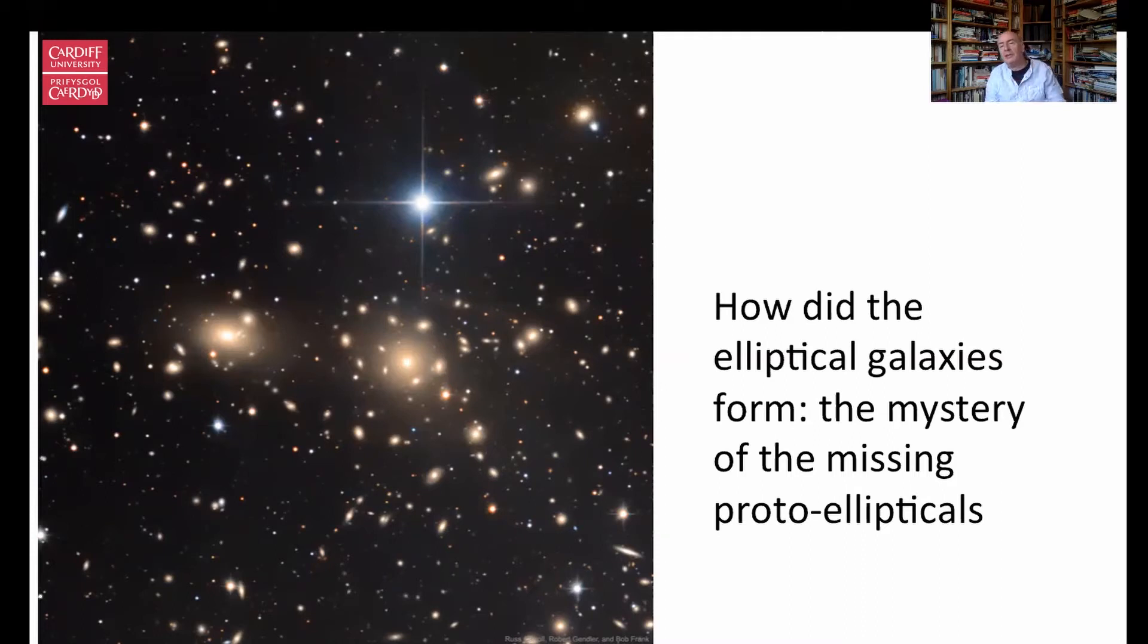They suspected the answer to that mystery was interstellar dust. Interstellar dust, tiny solid fragments of material in interstellar space, acts a bit like smoke, it hides and absorbs the optical light from galaxies. And people thought, well, maybe these proto-ellipticals are just so full of dust, you can't see them at visual wavelengths. But then there was a real possibility that we could actually still detect these things by making observations at sub-millimeter wavelengths.